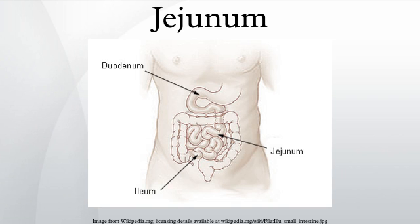In adult humans, the small intestine is usually between 5.5 and 6 meters long, 2.5 meters of which is the geodunum. The pH in the geodunum is usually between 7 and 9. If the geodunum is impacted by blunt force, the emesis reflex will be initiated.